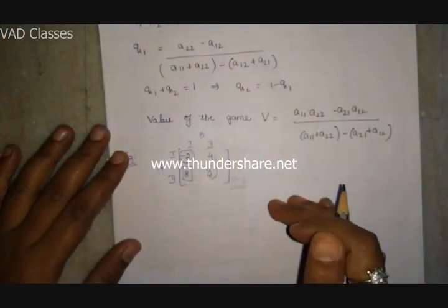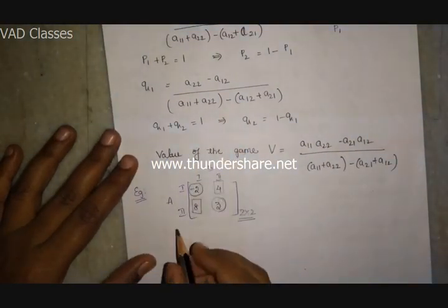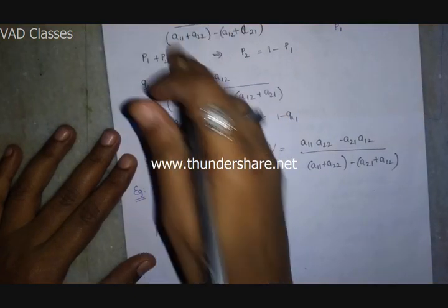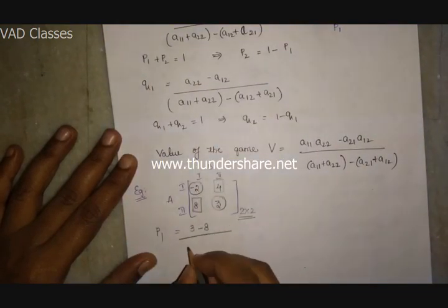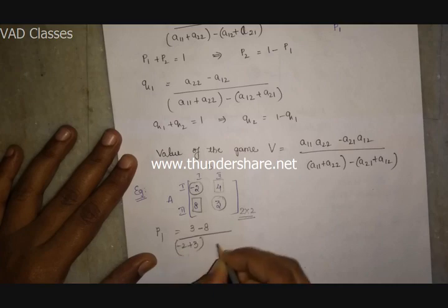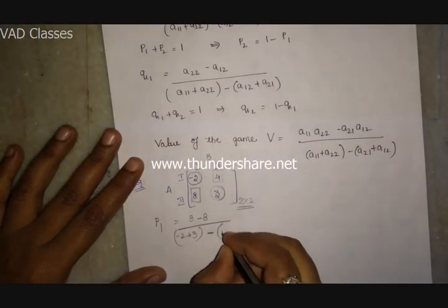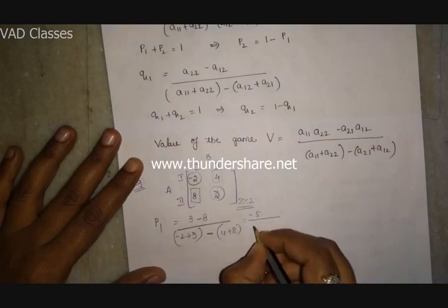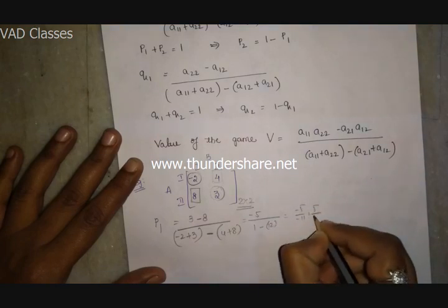Since there is no saddle point, we apply the mixed strategy formula. P1 = (A22 minus A21) / denominator = (3 minus 8) / [(minus 2 + 3) minus (4 + 8)] = minus 5 / (1 minus 12) = minus 5 / minus 11 = 5 by 11. Then P2 = 1 minus P1 = 1 minus 5/11 = 6 by 11.